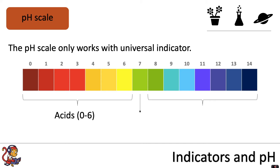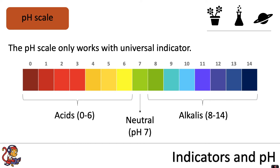You can identify the alkalis from pH 8 to pH 14, which will show a colour range from dark green through to purple. In the middle, a neutral substance of pH 7 would show a light green colour.